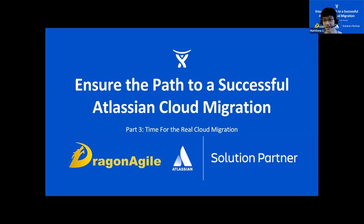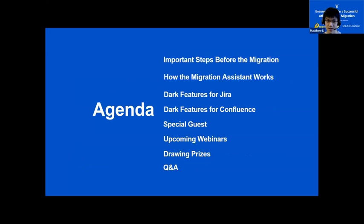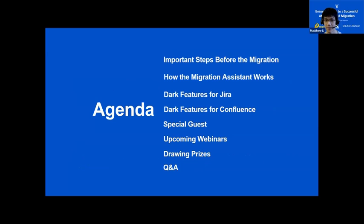Hi everyone, I'm Matthew. Nice to meet you all. Today I'm going to take you through the production migration steps for an Atlassian cloud migration. Here's today's agenda. First, we'll go over the important steps you should take right before the migration, and these apply to all Jira, Confluence, and Bitbucket. Then we'll go over how the migration assistant actually works. Next, we'll cover some dark features for both the Jira and Confluence migration assistant — features that are not enabled by default but could enhance your migration. After that, Morgan from Old Street Solutions will speak about migrating their dashboard apps to cloud. Then we'll talk about upcoming webinars, spin a wheel to see who wins today's prize, and at the very end there will be a chance for Q&A from the audience.